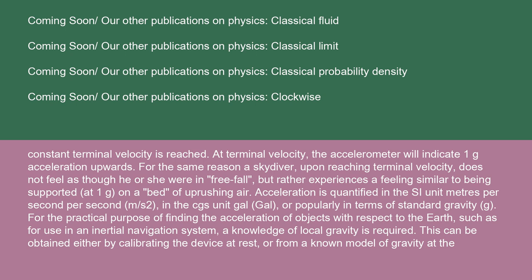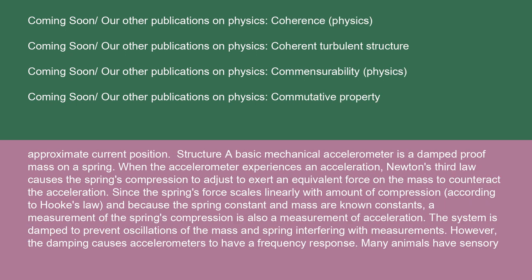The structure of a basic mechanical accelerometer is a damped proof mass on a spring. When the accelerometer experiences an acceleration, Newton's third law causes the spring's compression to adjust to exert an equivalent force on the mass to counteract the acceleration. Since the spring's force scales linearly with amount of compression according to Hooke's law, and because the spring constant and mass are known constants, a measurement of the spring's compression is also a measurement of acceleration. The system is damped to prevent oscillations of the mass and spring interfering with measurements. However, the damping causes accelerometers to have a frequency response.